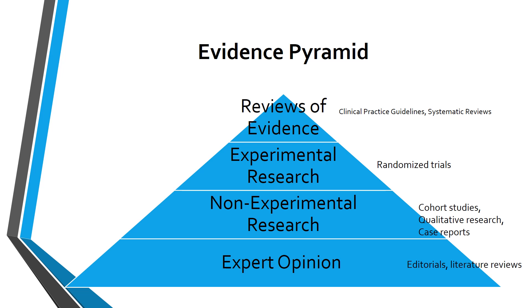Next up on the pyramid, we have experimental research. This is often more clinical and includes randomized controlled trials. These may be rigorous studies, but they are still only a single study. At the top of the pyramid, we have reviews of evidence. These go through existing research systematically to compare and contrast results. Systematic reviews and guidelines are generally considered the highest level of evidence because they look at an entire body of evidence, not just one study.